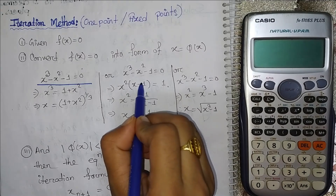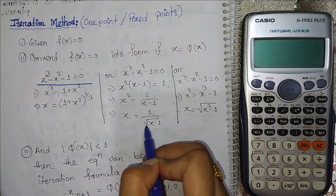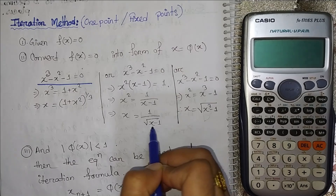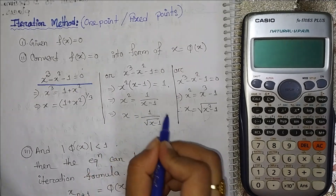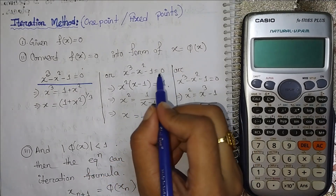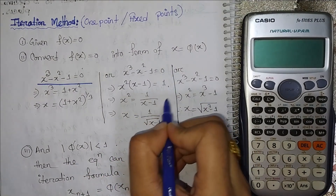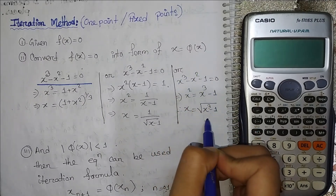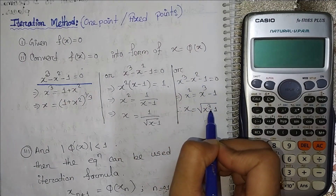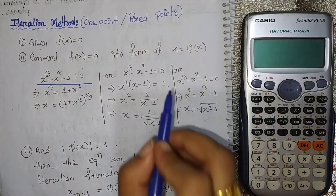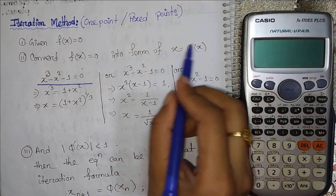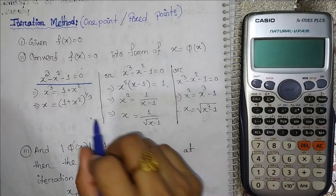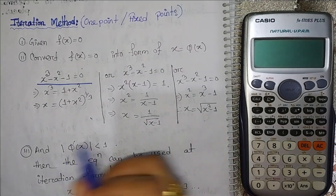One rearrangement gives x minus 1 equal to the root over 1 divided by root over x minus 1. This is one form. We can also write x squared and get different phi(x) forms. The first step is to rearrange the equation correctly.